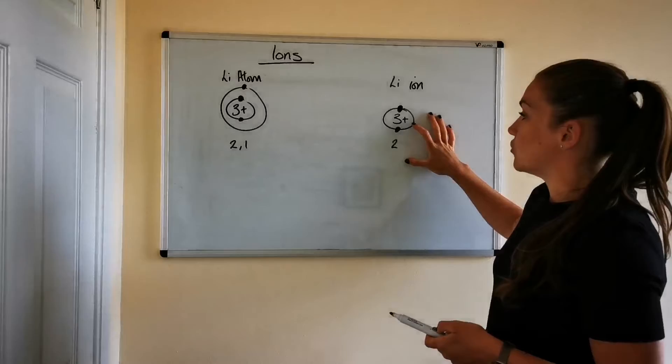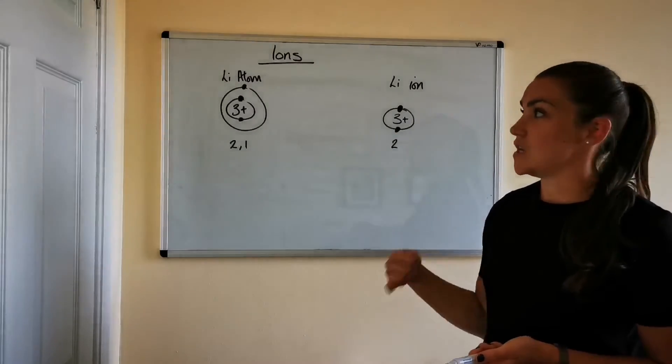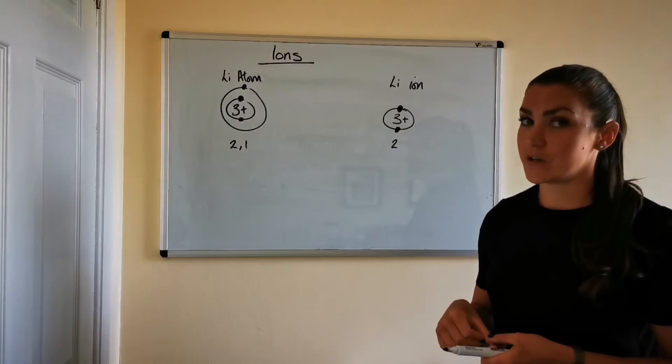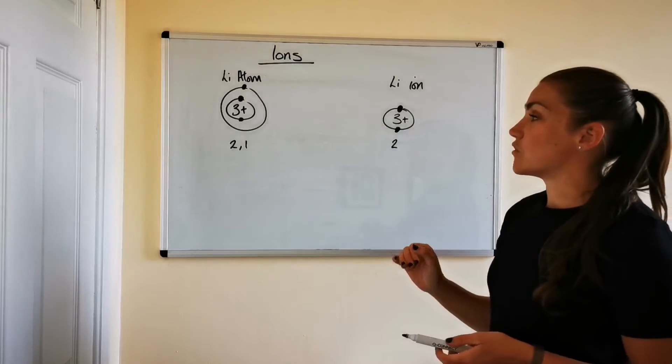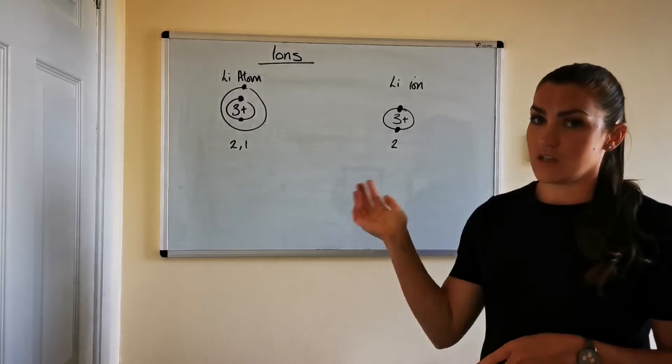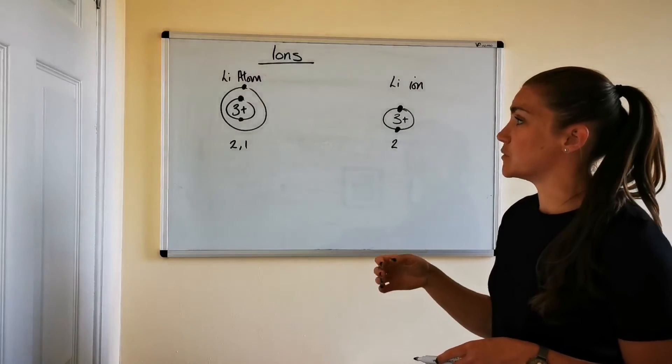So you'll notice the number of protons in the nucleus hasn't changed. If we change the number of protons in the nucleus we don't actually have that element anymore. So when it comes to forming ions and becoming stable the only thing that changes is the electrons. Electrons are either gained or lost between atoms in order for them to become stable.